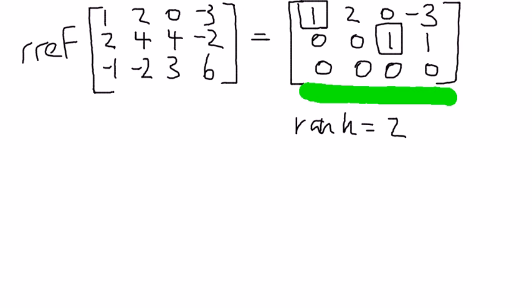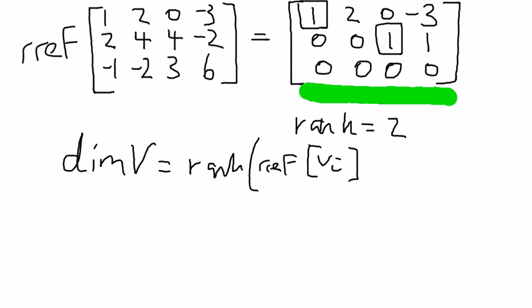And the interesting thing about that is that that is the dimension of the vector space, which is what we're looking for. The dimension of the vector space is equal to the rank of the reduced row echelon form of the augmented matrix. So that's quite interesting and a lot easier way of looking at it. Just reduce it to reduced row echelon form, and then you put your answer.